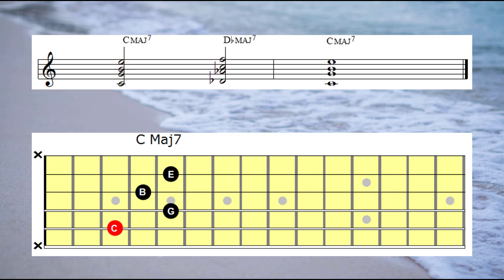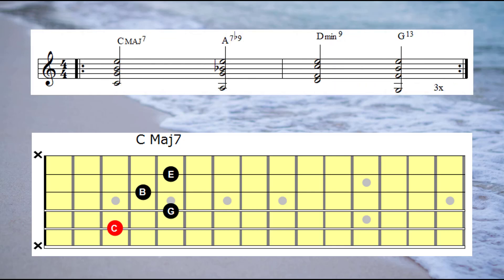Now that chord progression that we've just played is sometimes interpreted as C major 7, A7 flat 9, D minor 9 to G7. Let's have a listen to how that chord progression would shape up with the constant E note as the top note of each chord.